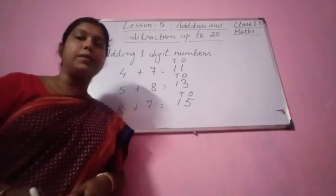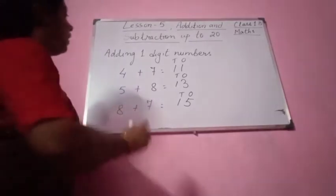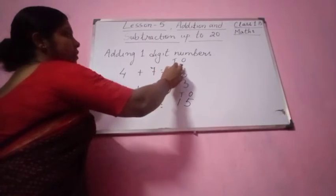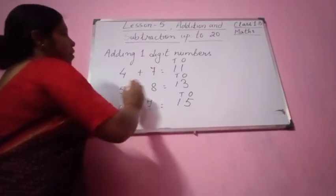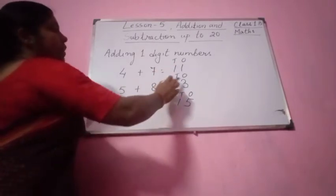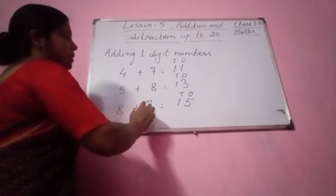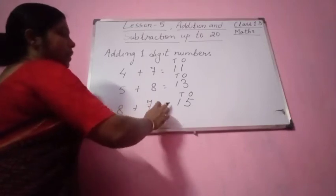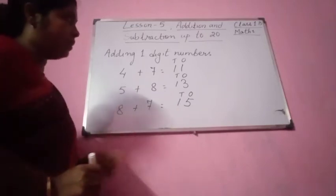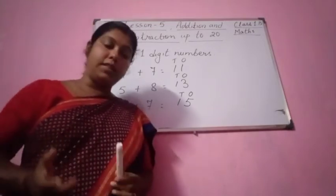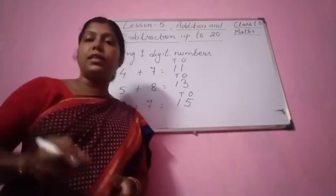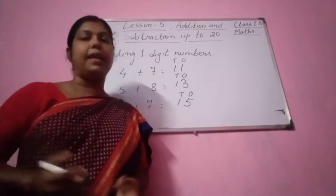Please try to understand. Here we are adding one digit numbers. 4 plus 7 equal to 11 — 1 ten, 1 one. 5 plus 8 equal to 13 — 1 ten, 3 ones. 8 plus 7 equal to 15 — 1 ten and 5 ones. So in this way you can add one digit numbers.